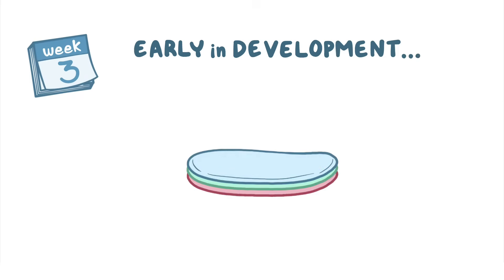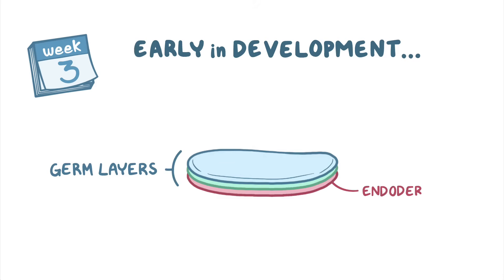Early in embryonic development, during the third week post-fertilization, the embryo is a flat, disc-shaped organism made up of three layers of pluripotent cells called germ layers, which give rise to all the organs and tissues in the body. An inner layer called endoderm, a central layer called mesoderm, and an outer layer called ectoderm.